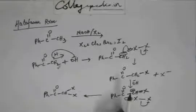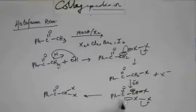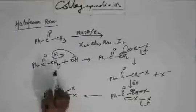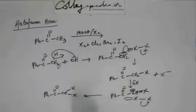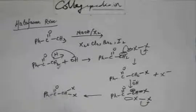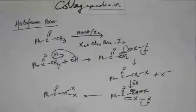Again the same process repeats: base comes, abstracts hydrogen, negative charge is developed on carbon, and that negative charge goes and attacks halogen — one X is added. Now this third hydrogen which is left is even more acidic than the last two. Because the first time you had only resonance; the second time you had resonance and inductive effect of one halogen. Now if this hydrogen is removed, you will have resonance and inductive effect of two halogens. So this hydrogen is even more acidic, and if the first two have been extracted, the third obviously will be.